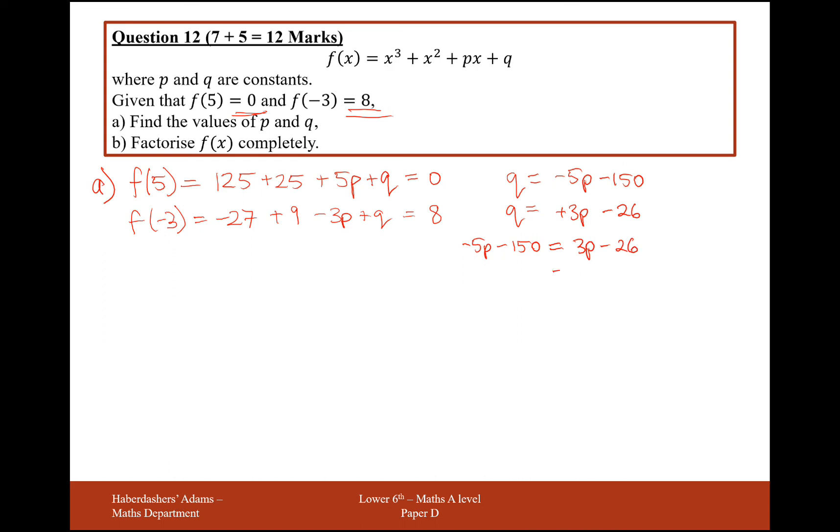So adding the 5p onto the other side, you get minus 8p. Adding the 26 onto the other side, it's going to be plus 26 over here once you've added it onto the other side. So you add that there, take it away onto the other side, and you get minus 176. Divide through by 8, and p is minus 22.